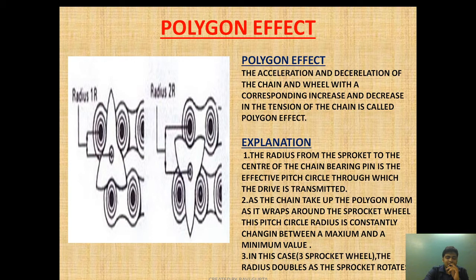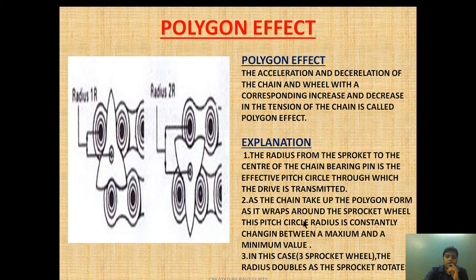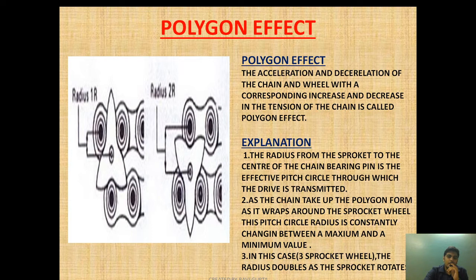This change also causes increase and decrease in the tension of the chain wheel — this effect is called the polygon effect. The radius from the sprocket to the center of the chain is the effective pitch. This effective pitch is constantly changing as the chain takes up the polygon form as it is wrapped around the sprocket wheel. The pitch circle radius changes between a maximum and minimum value. In a three-tooth sprocket, the radius doubles as the sprocket rotates, causing maximum acceleration and deceleration — so we avoid three-tooth sprockets.